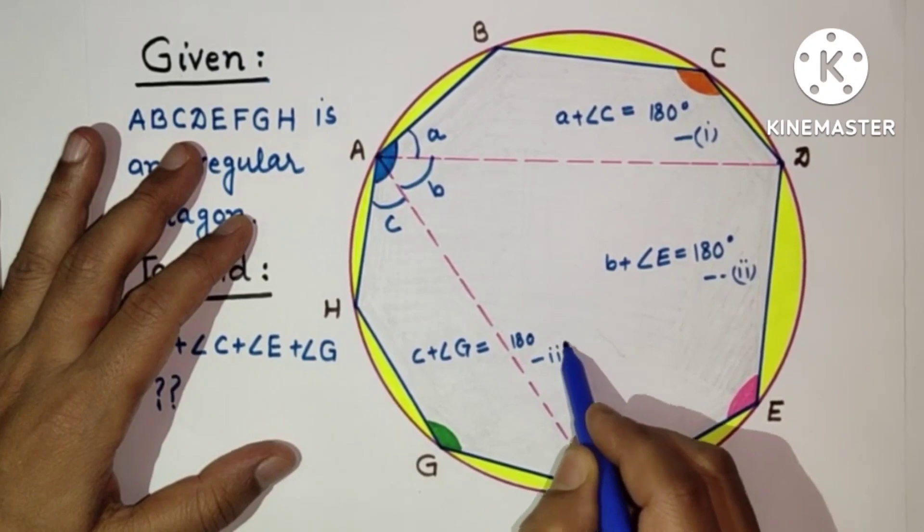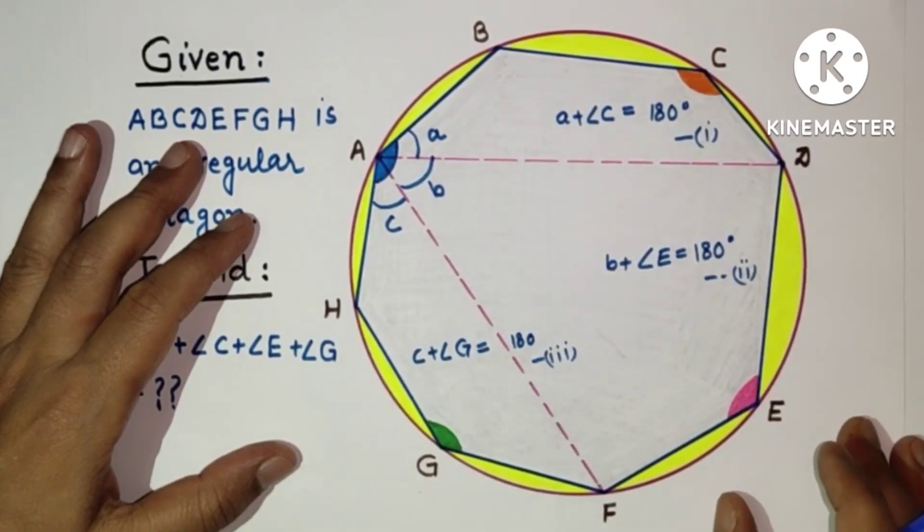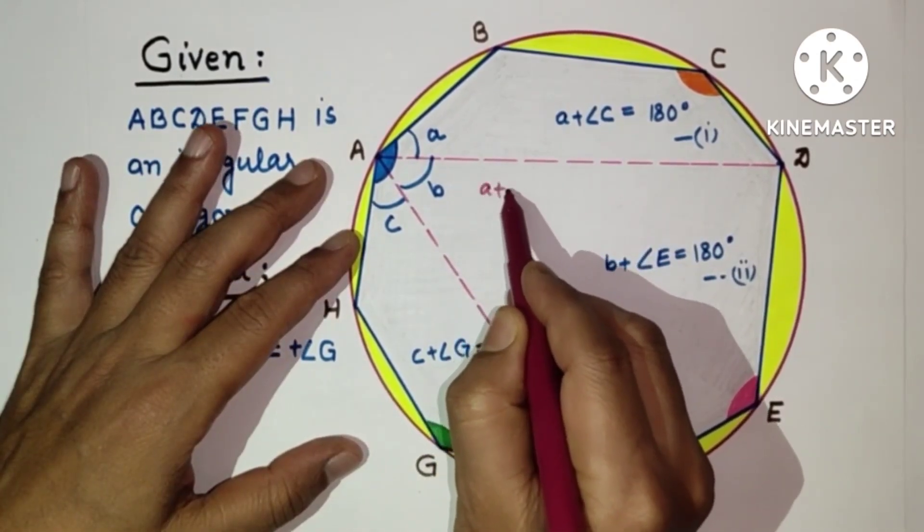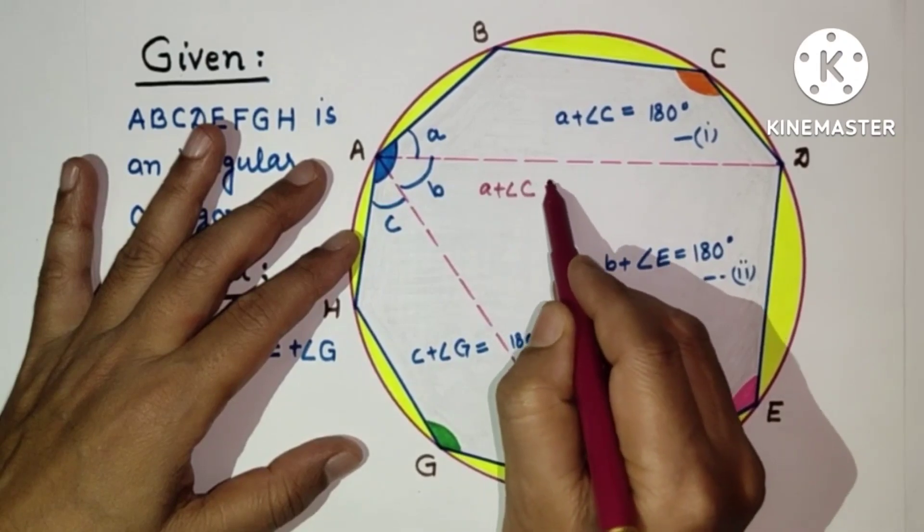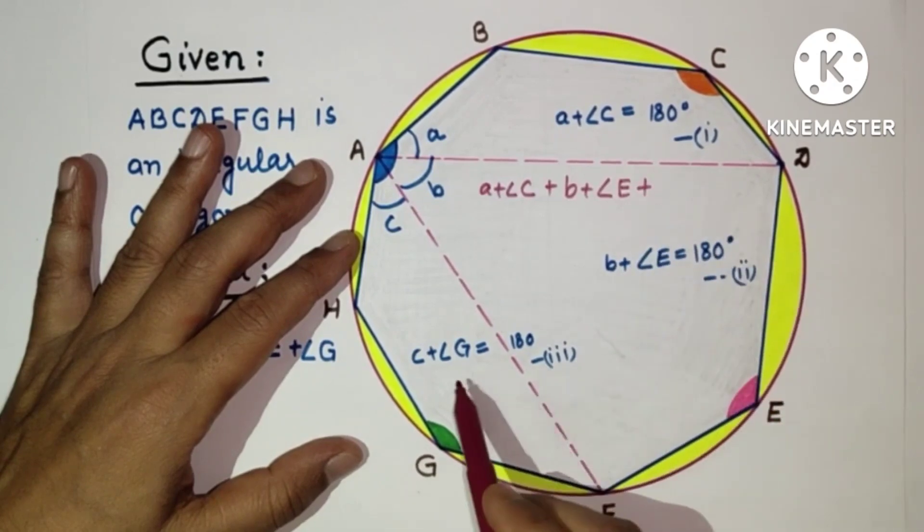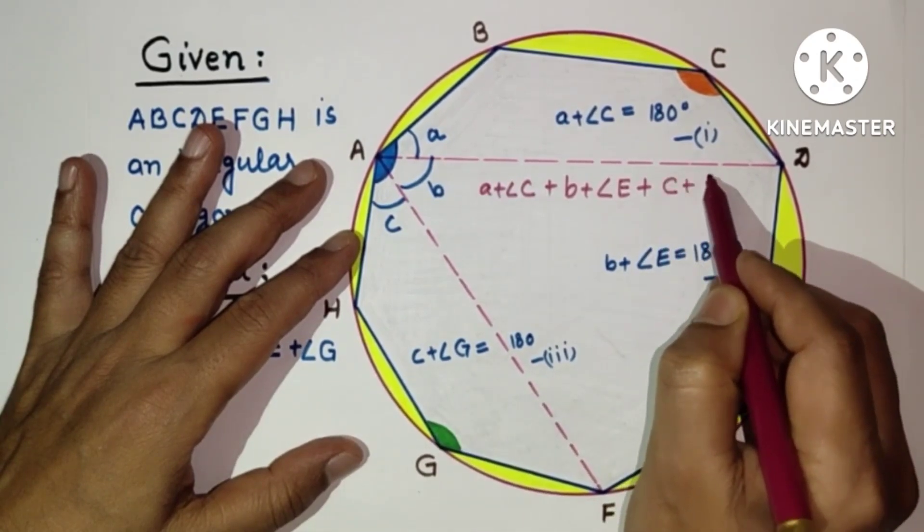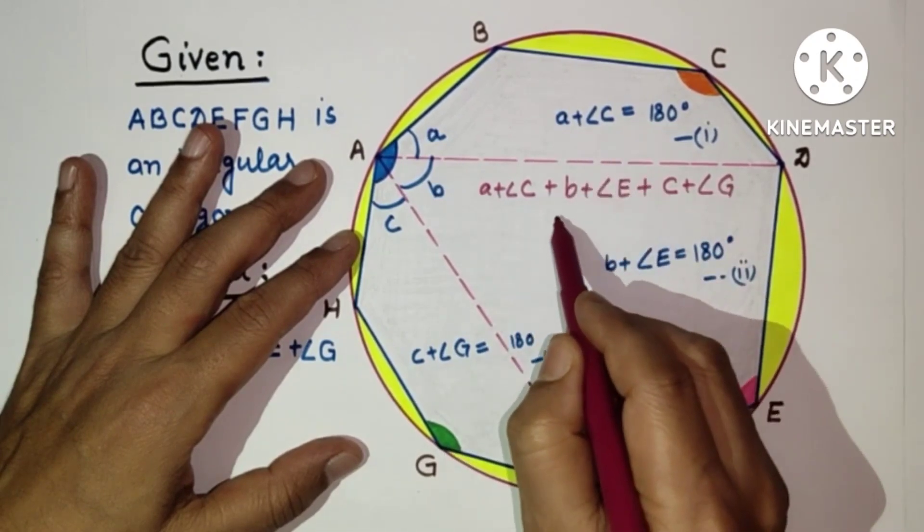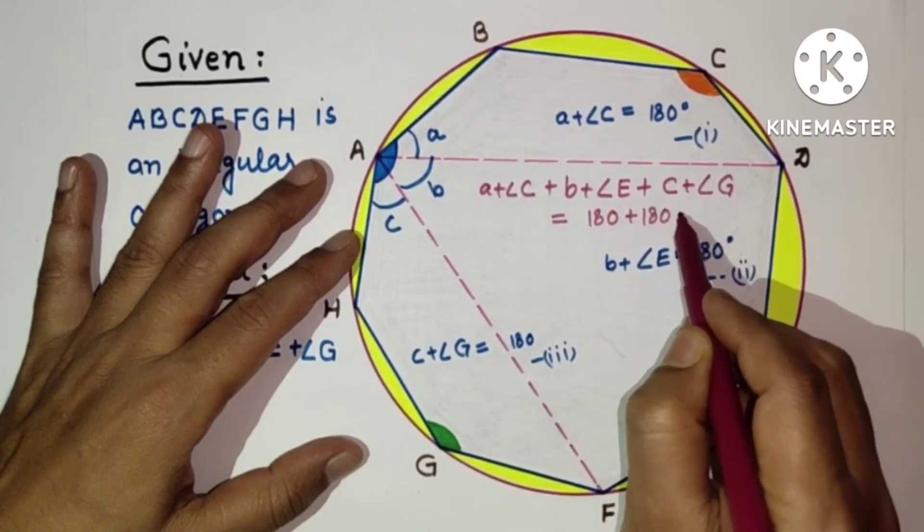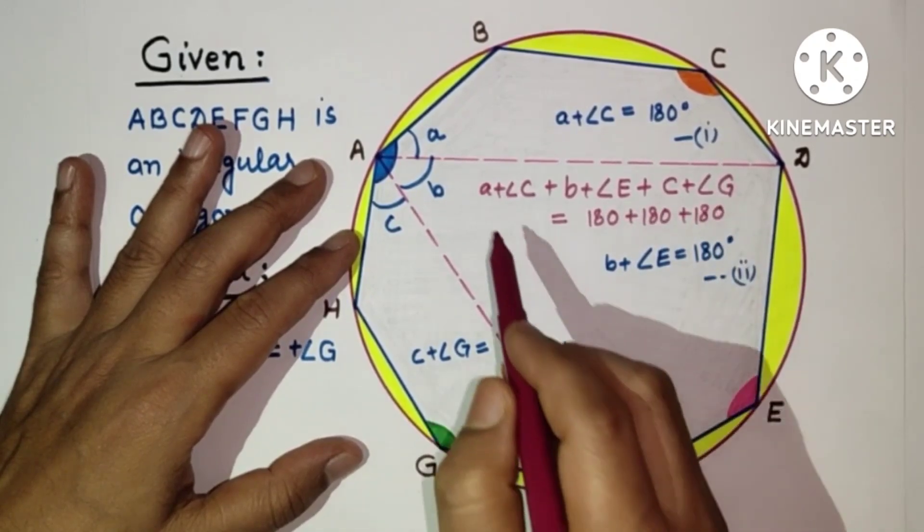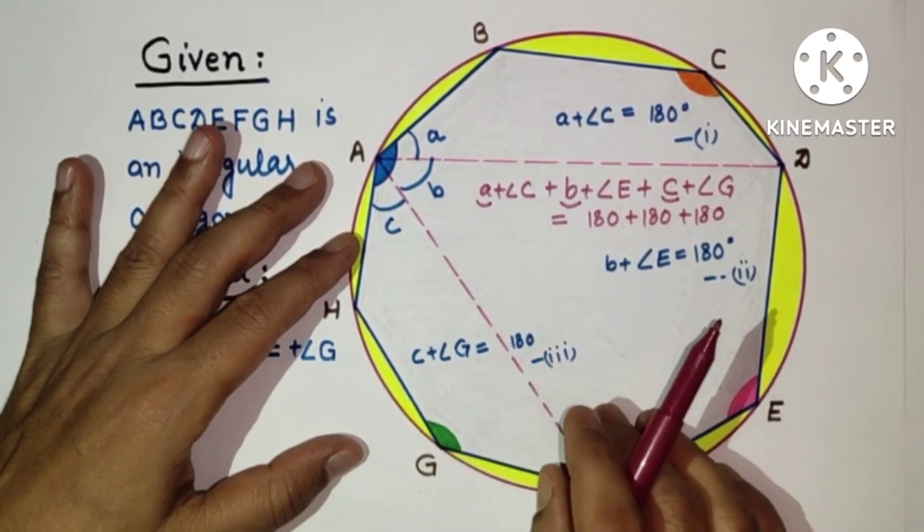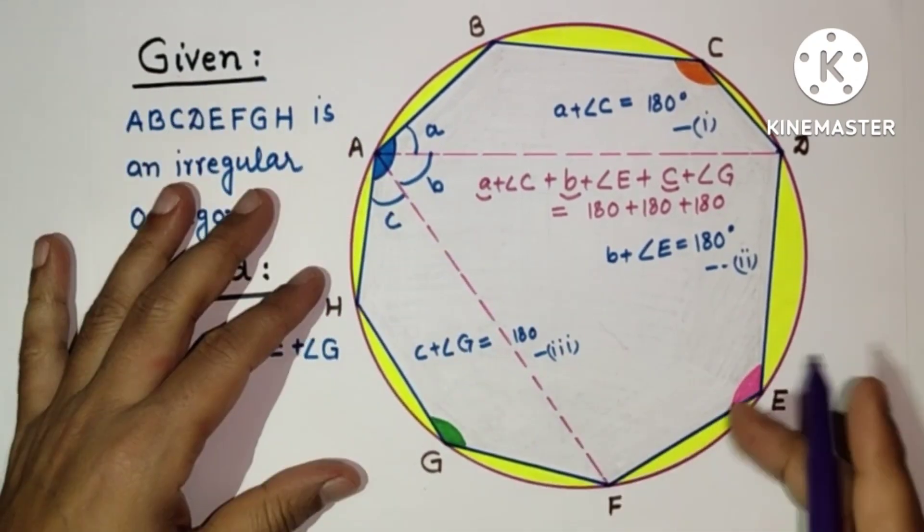If we add all, we will get angle a plus angle c, so we will get angle a plus angle c plus b plus angle e plus c plus angle g equals 180 plus 180 plus 180 plus 180. Now a, b, and c, if we write these three things together, we are getting a plus b plus c plus angle e plus angle g.